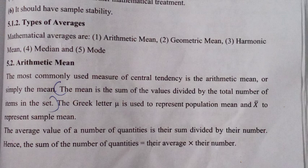We have types of average. The first one is arithmetic mean. Arithmetic mean is the sum of the values divided by the total number of items in the set. That is, sigma x by n, which gives us x bar.